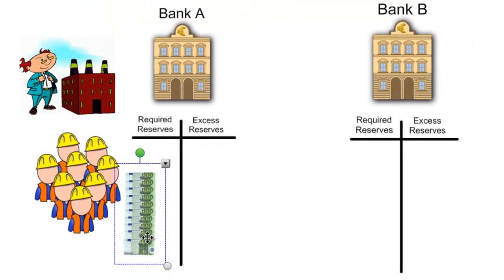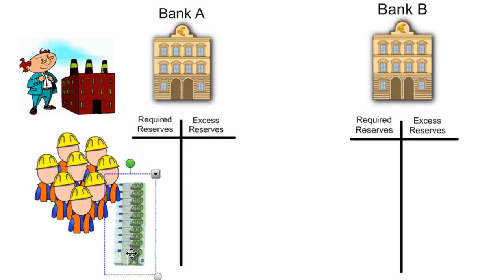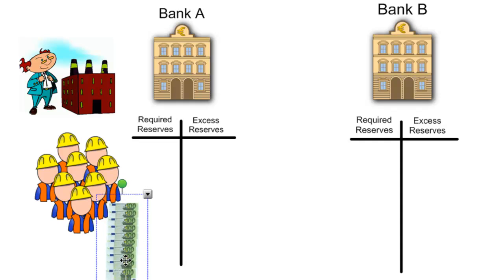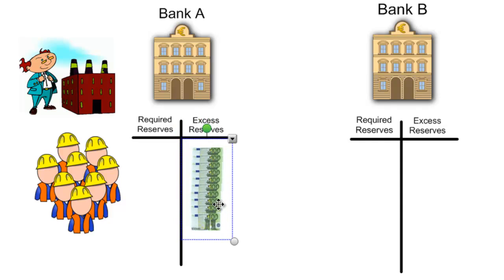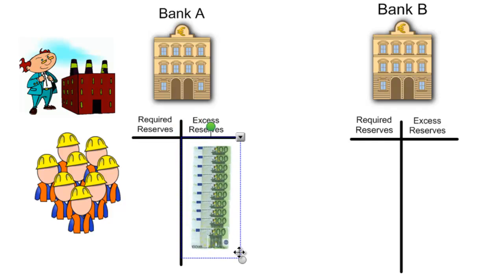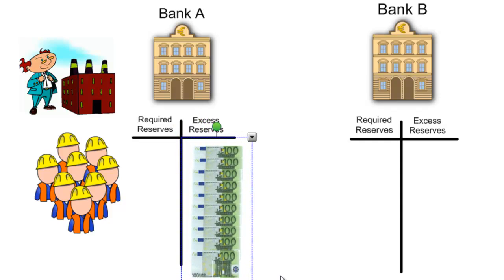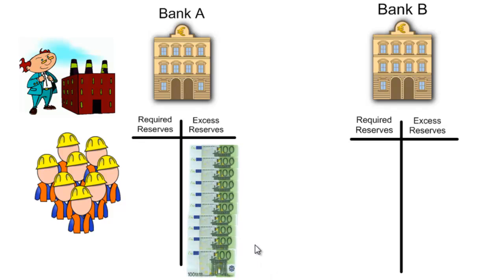These workers will spend some of this money and save some of it, but ultimately any money spent or saved by the workers at this factory will end up being deposited into hypothetical Bank A. Bank A is a savings institution at which the workers and the people who received money from the production of goods and services are saving their money. As a result, there is an increase in Bank A's total reserves by 1,000 euros.